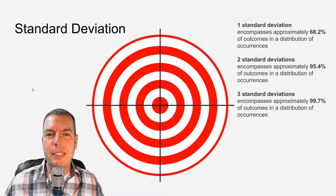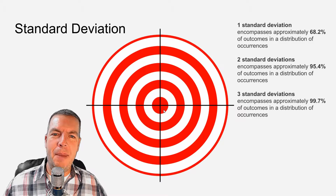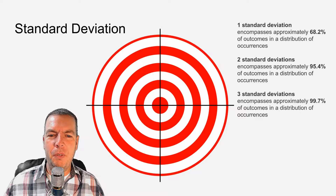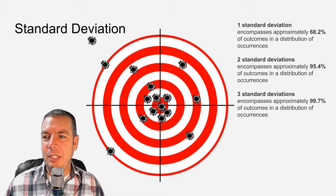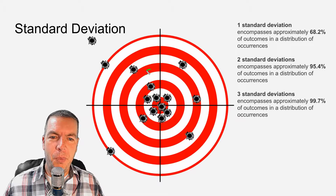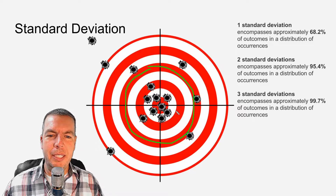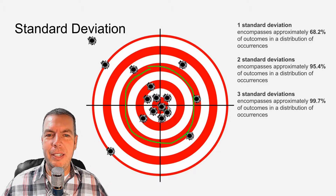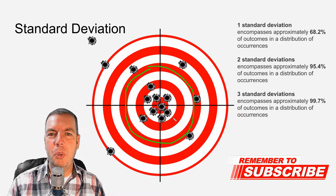Let me show you an example. If you ever go to the range and you're target practicing, trying to hit a bullseye, most of your shots are going to be right there in that middle range — you're going to have some outliers. So 68.2% is going to fall in that one standard deviation range. This area here represents that one standard deviation range, encompassing 68.2% of all our outcomes. Looking at that target, you can see most of the data or shots fell in that 68.2% range.